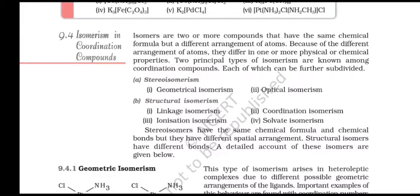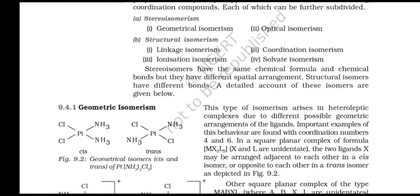Isomerism in Coordination Compounds: Isomers are two or more compounds that have the same chemical formula but different arrangements of atoms, causing them to differ in one or more physical or chemical properties. Two principal types of isomerism are known among coordination compounds: stereoisomerism (geometrical isomerism and optical isomerism) and structural isomerism (linkage isomerism, ionization isomerism, coordination isomerism, and solvate isomerism). Stereoisomers have the same chemical formula and bonds but different spatial arrangement, while structural isomers have different bonds.